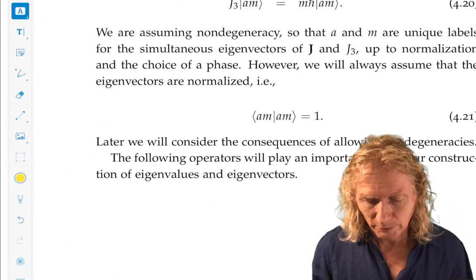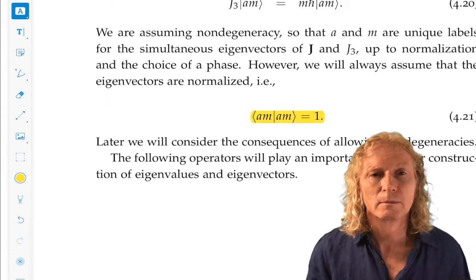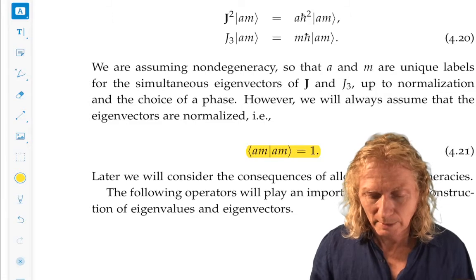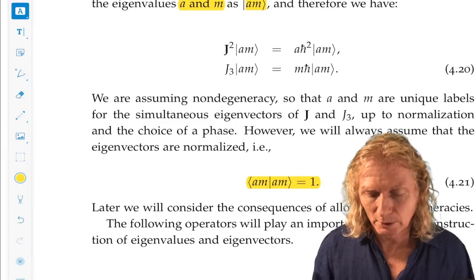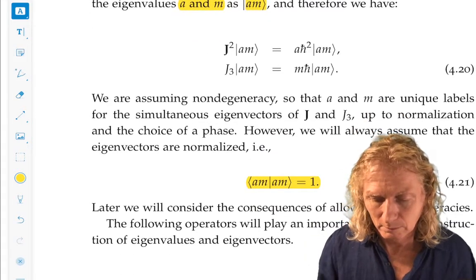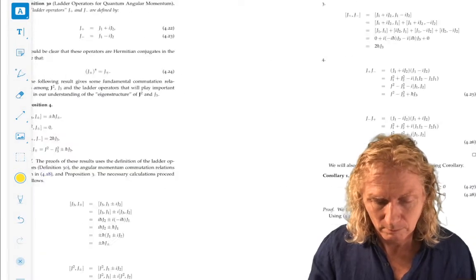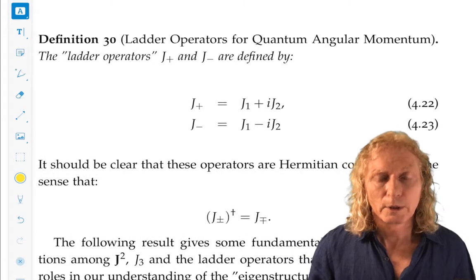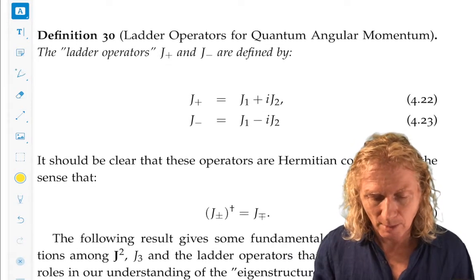The normalization condition would then write like this. That should do it for the notation. We're going to define ladder operators.